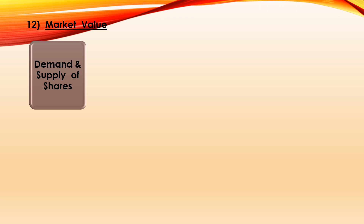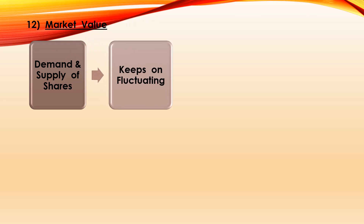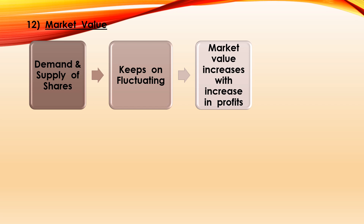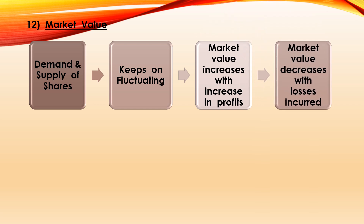The twelfth feature is market value. Market value is that value which is determined by demand and supply of shares in the market, and it keeps on fluctuating depending upon the performance of the company — profits earned or losses incurred, dividend declared, etc. Whenever the company's profits increase, it results in an increase in the market value of shares. When the company incurs losses, the market value of shares decreases. So market value depends upon the profits earned and losses incurred by the company.